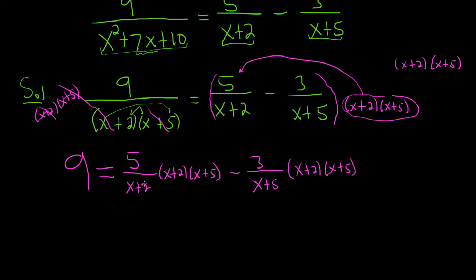Okay, that's an ugly tool over here. Let me fix that. That just made it worse. Okay. All right, so this is 9 equals. Well, fortunately, the x plus 2 cancels. So we're left with 5, parentheses, x plus 5, minus, and then the x plus 5 cancels, 3, parentheses, x plus 2.